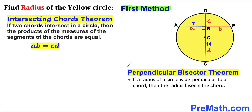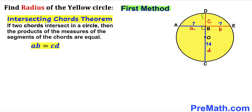Now let's recall the perpendicular bisector theorem. According to this theorem, if a radius of a circle is perpendicular to a chord, then the radius bisects the chord. We can see that radius OD is perpendicular to chord AE, so line segment AB equals line segment BE — both are 7 units.